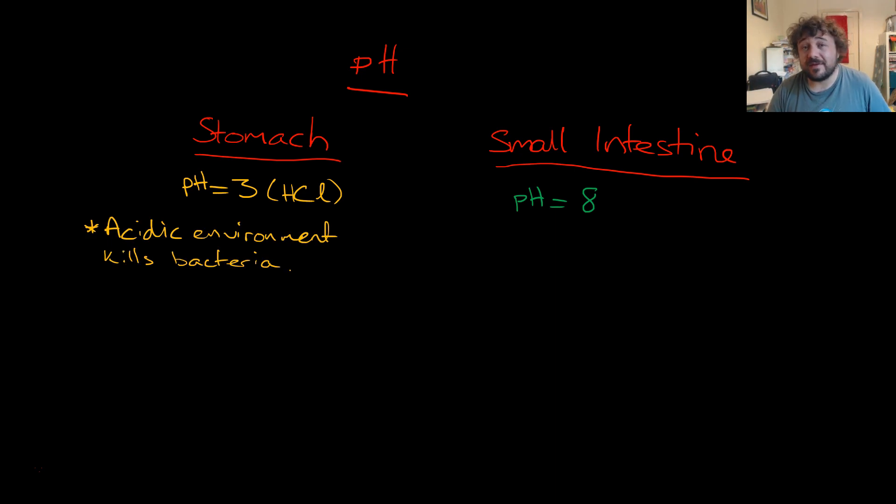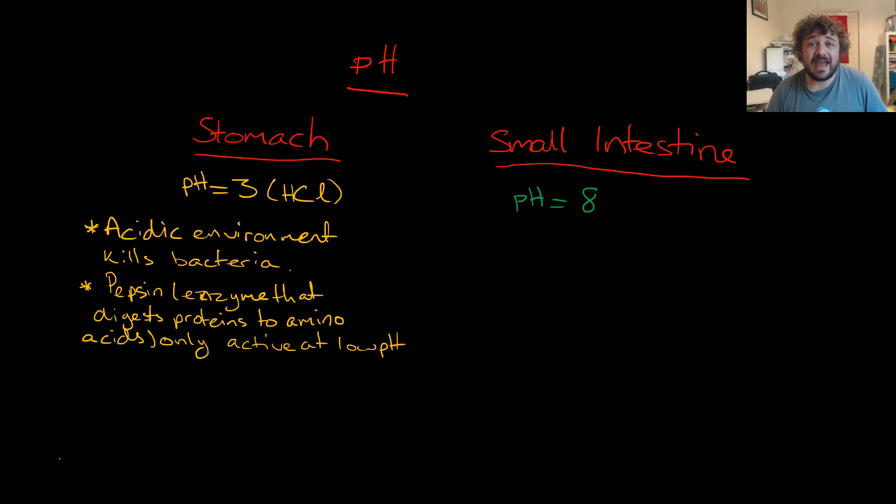So the stomach has an acidic environment which kills bacteria. It also has pepsin in there. Now, pepsin is the enzyme which breaks down proteins or digests proteins, and this enzyme is only active at a low pH. So if it's in an area with a high pH, if you're trying to break down proteins in your small intestine, it wouldn't work because the pepsin won't work.